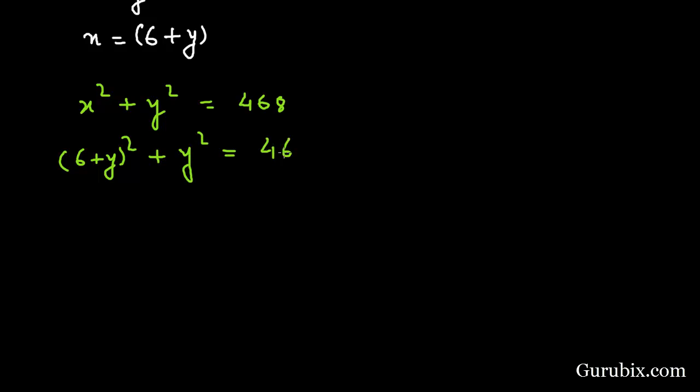If we expand this whole square of 6 plus y, then we have y square plus 12y plus 36. Here we have y square, and we shall take this 468 to the left-hand side, then it will be minus 468 equals 0.